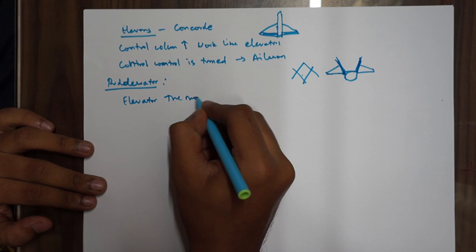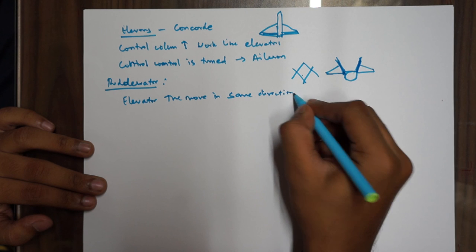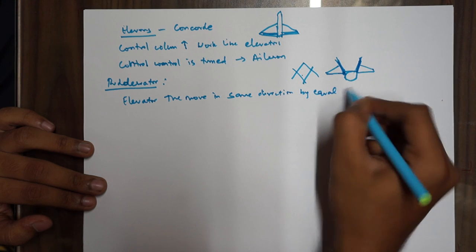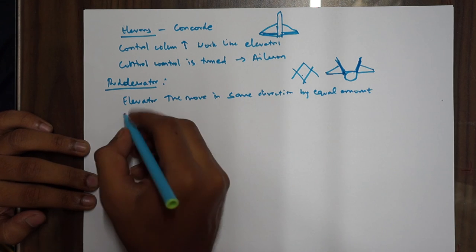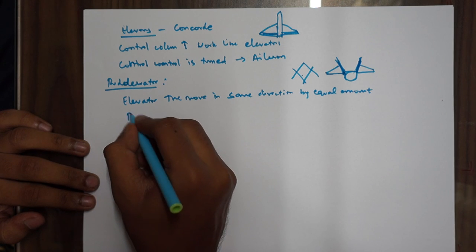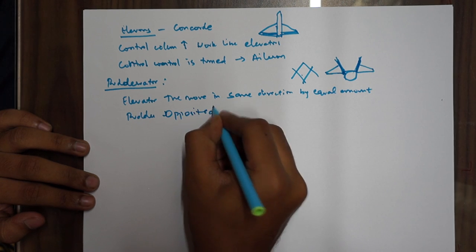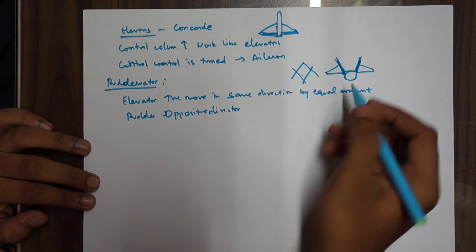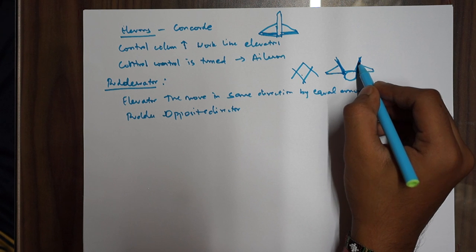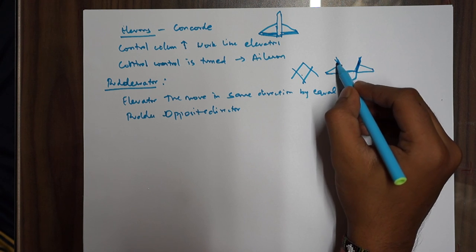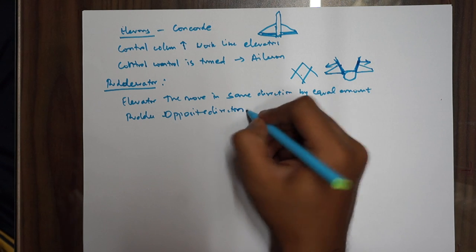When functioning as an elevator, the ruddervators move in the same direction by equal amounts. When they work as a rudder — say to yaw to the right — one side moves in the opposite direction to the other, causing a yaw.